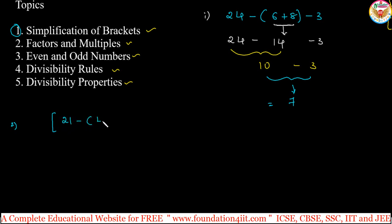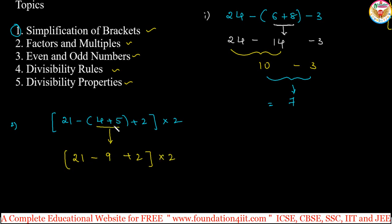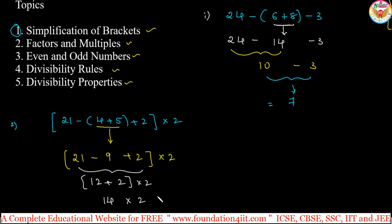Evaluate: 21 - [4 + 5] × 2. There is a single bracket, so evaluate it first. 4 + 5 = 9, which is the innermost part. Then 21 - 9 = 12, and 12 + 2 = 14. Remove the bracket: 14 × 2 = 28. The final answer is 28.